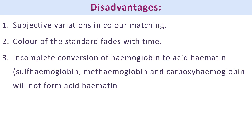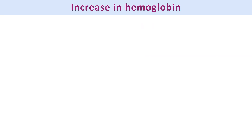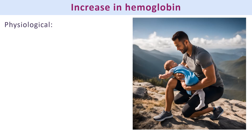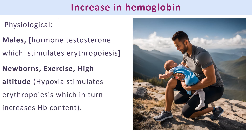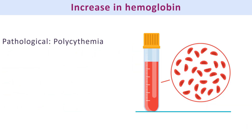An important viva question: what are the different causes of variation in hemoglobin? Physiological causes of increased hemoglobin: males (testosterone stimulates erythropoiesis), newborns (hypoxia stimulates erythropoiesis), exercise (stimulates erythropoiesis), and high altitude (hypoxia stimulates erythropoiesis).